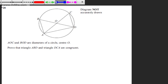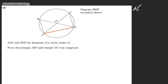My first statement is that AD is common to both triangles. We can see that AD forms part of triangle ABD and it also forms part of triangle DCA. So AD is common to triangle ABD and triangle DCA. That's my first statement.